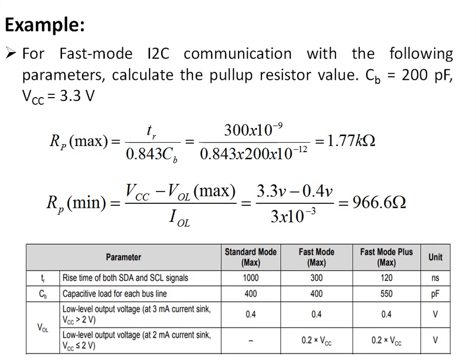Example for fast mode I2C communication: given bus capacitance of 200 pF and VCC of 3.3 volts, calculate the pull-up resistor value. Rise time for fast mode is 300 nanoseconds. Rp(max) equals tr divided by (0.843 × Cb) equals 300 ns divided by (0.843 × 200 pF), giving approximately 1.77 kilohms. Rp(min) equals (VCC − VOL(max)) divided by IOL equals (3.3 − 0.4) divided by 3 mA, giving approximately 966.6 ohms.